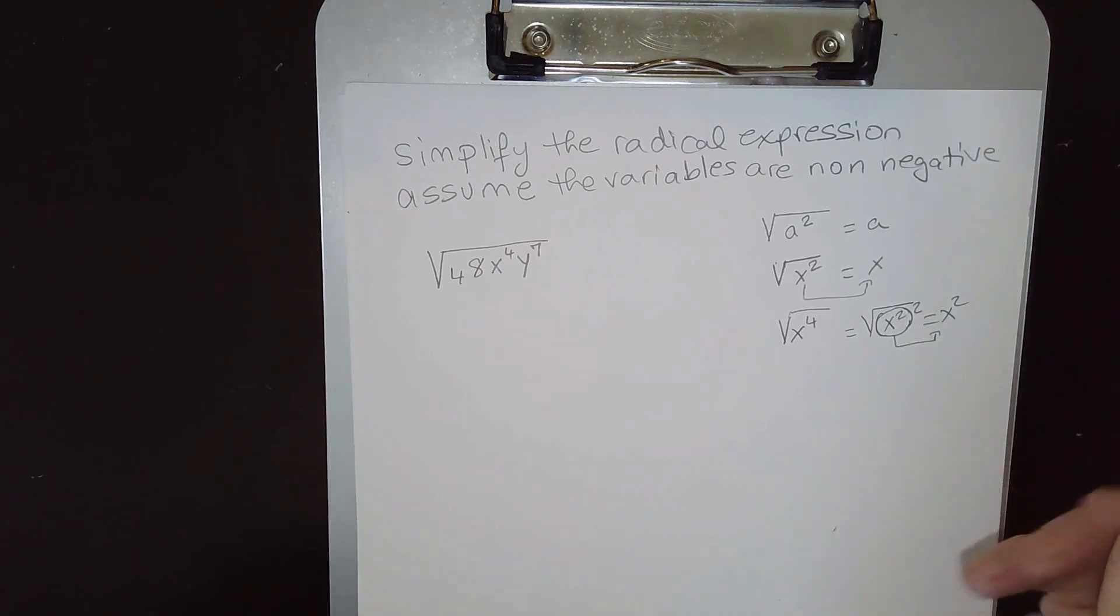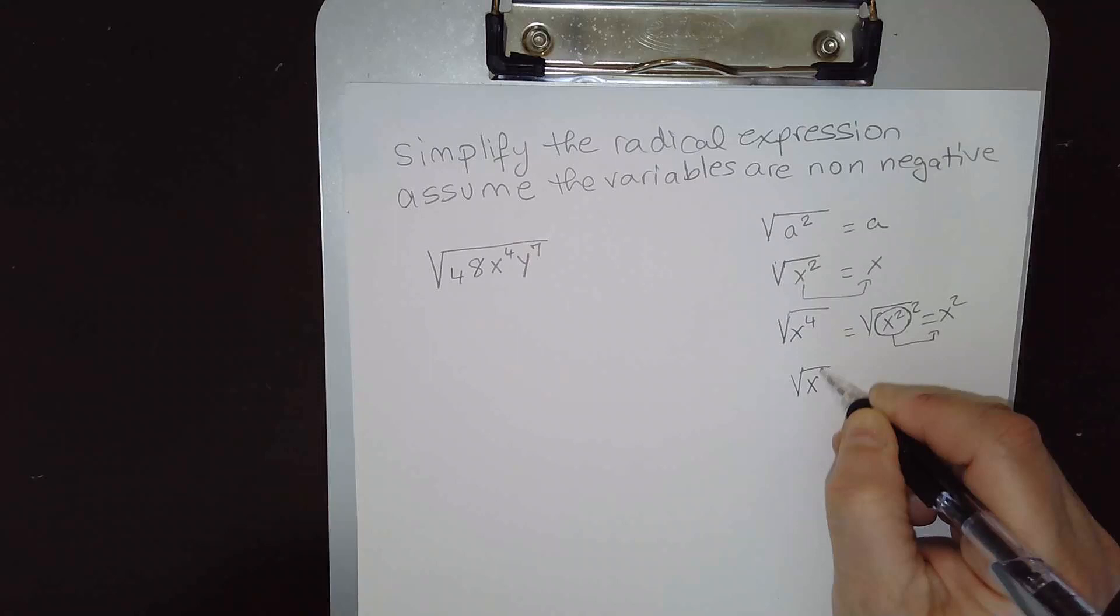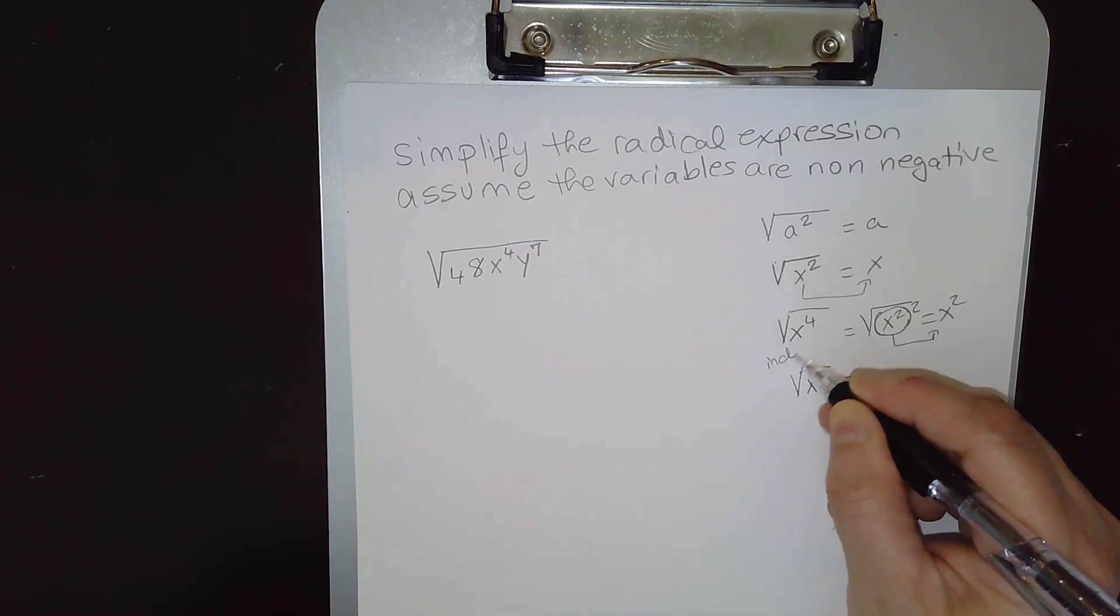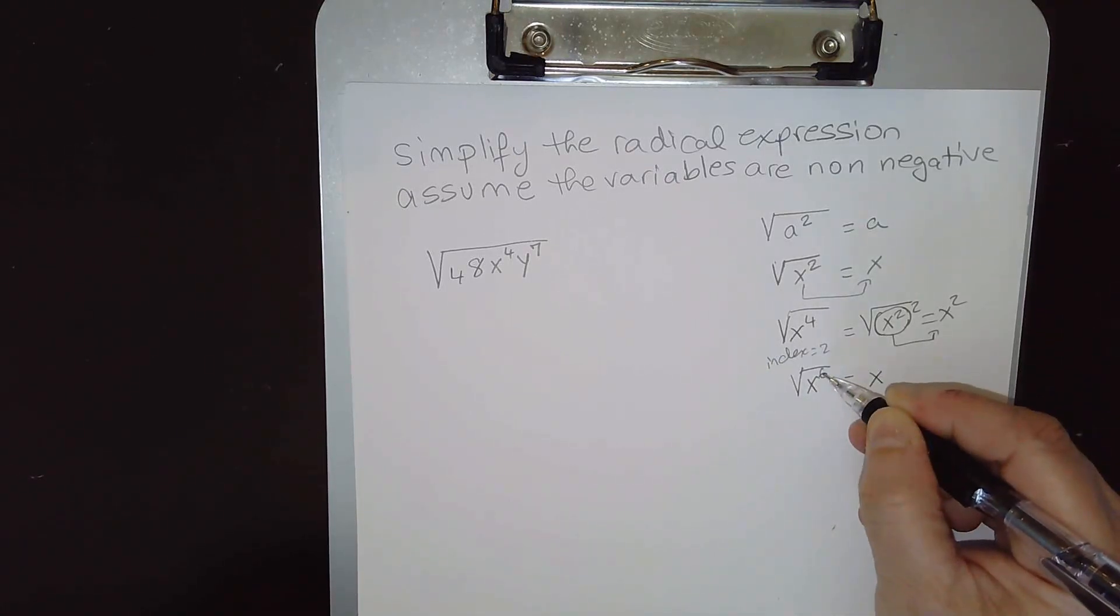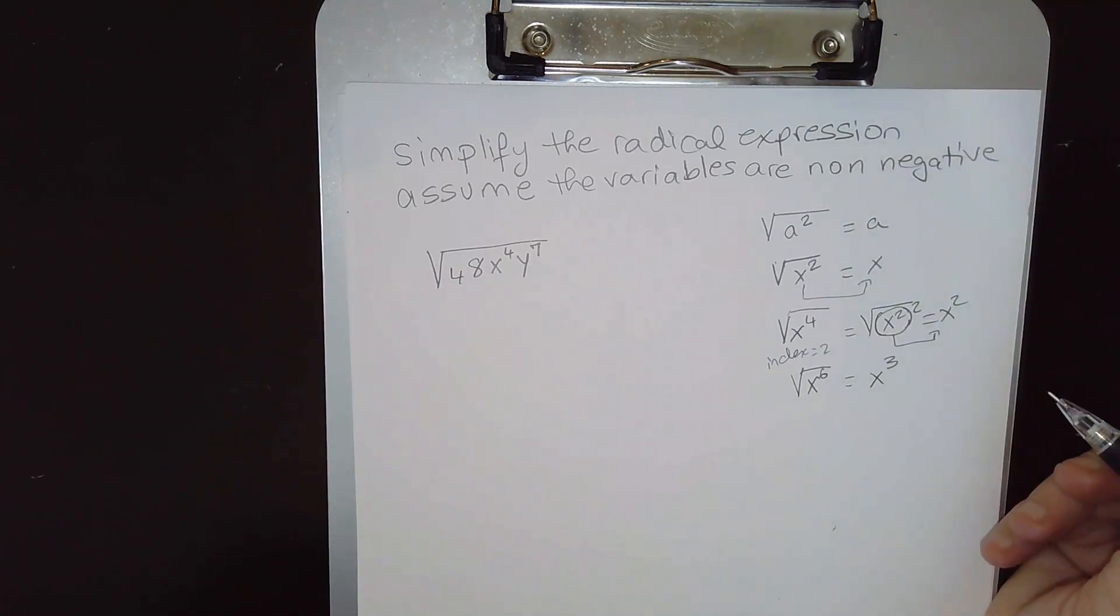An easier way of seeing this is dividing the power by 2 because we have a square root. The index is 2. So that would give us 6, the power divided by the index 2. 6 divided by 2 is 3, and this one comes out as 3.